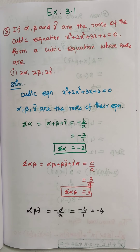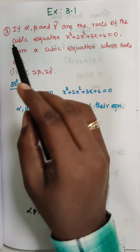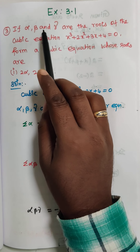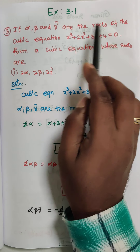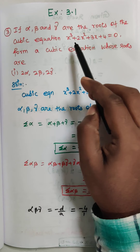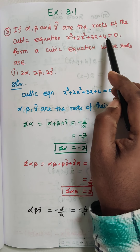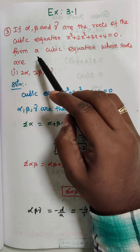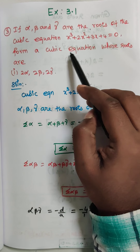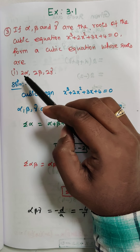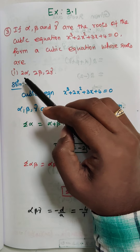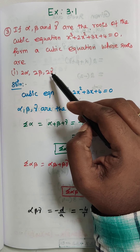Hi students, this is Dinesh here. Now we are going to discuss Exercise 3.1, Question Number 3. If alpha, beta, and gamma are the roots of the cubic equation x³ + 2x² + 3x + 4 = 0, form a cubic equation whose roots are 2α, 2β, 2γ.